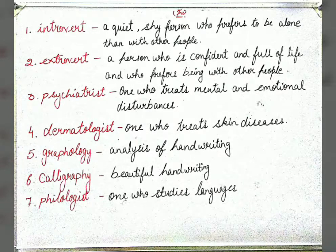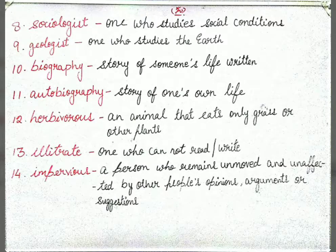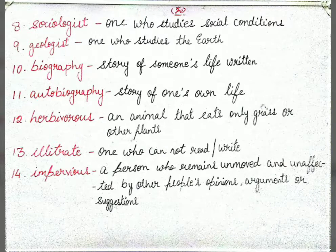The next is 'calligraphy' — beautiful handwriting. The seventh is 'philologist' — one who studies languages. The eighth is 'psychologist' — one who studies the mind. And when a person studies social conditions, they are called a 'sociologist'.